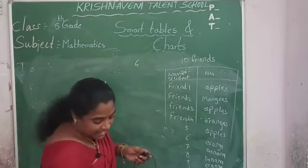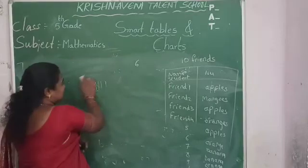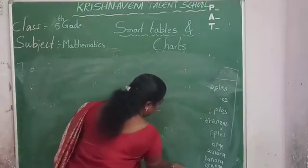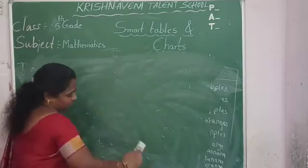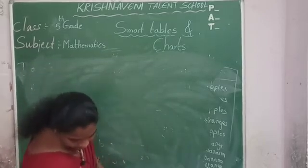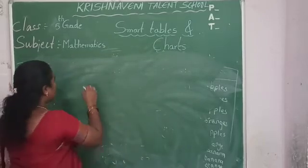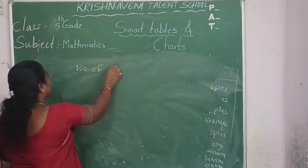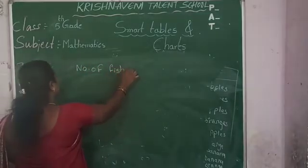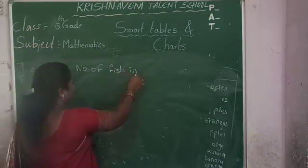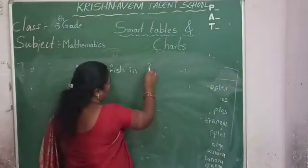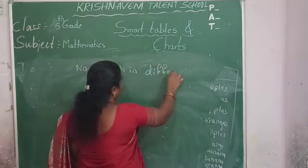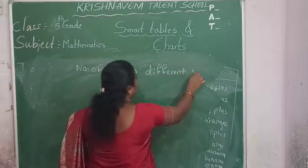So once I will take another example using tally marks. See here — the number of fishes in five different aquariums.